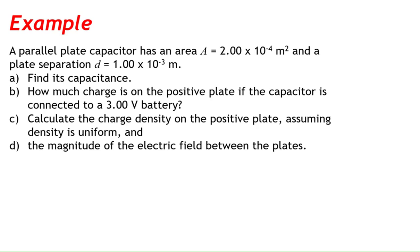A parallel plate capacitor has an area A equals 2.00 times 10 to the minus 4 meters squared, and a plate separation D equals 1.00 times 10 to the minus 3 meters. Find its capacitance. How much charge is on the positive plate if the capacitor is connected to a 3.00 volt battery? Calculate the charge density on the positive plate, assuming density is uniform, and the magnitude of the electric field between the plates.